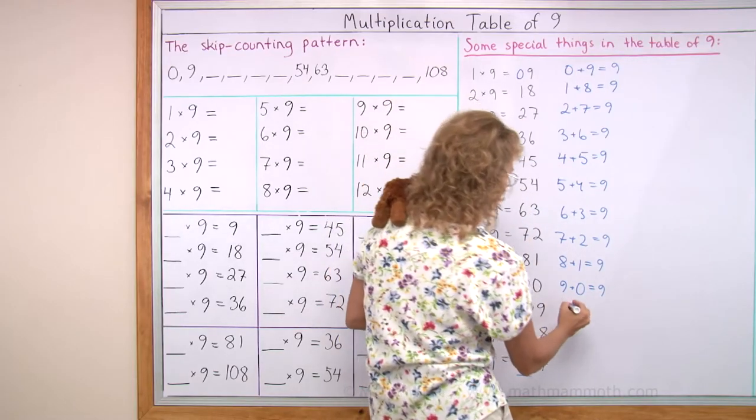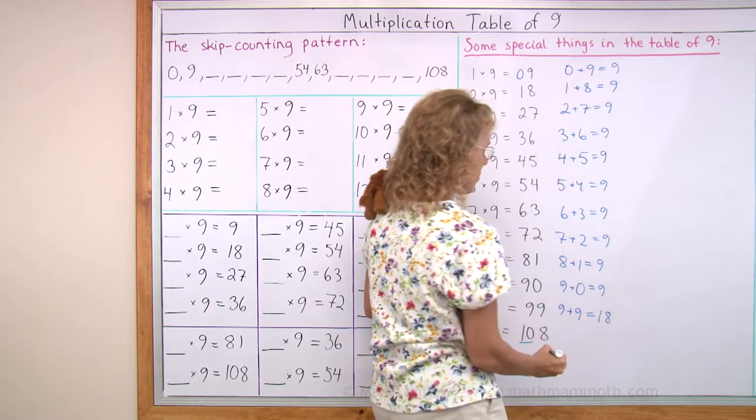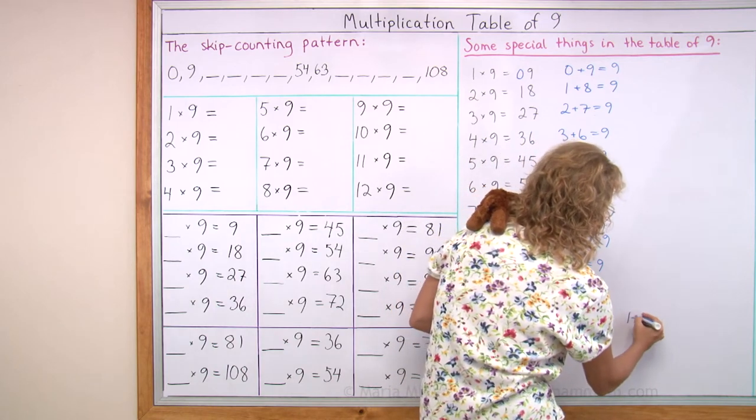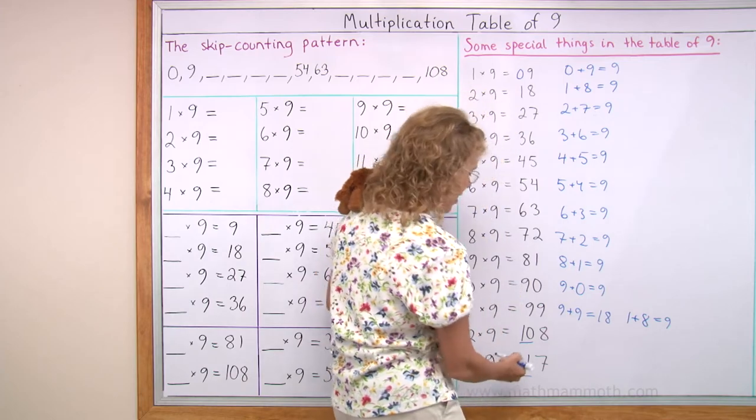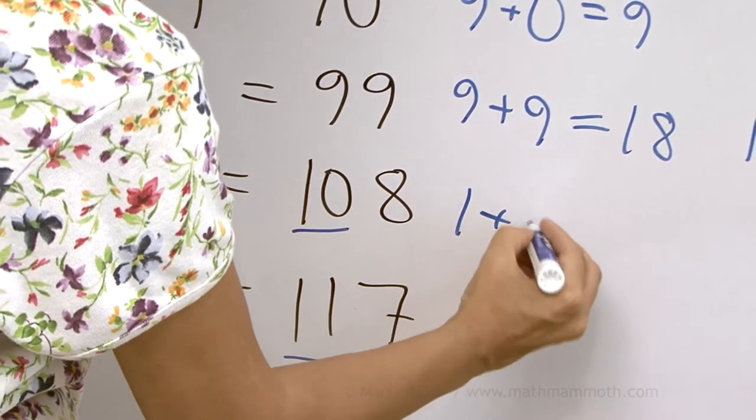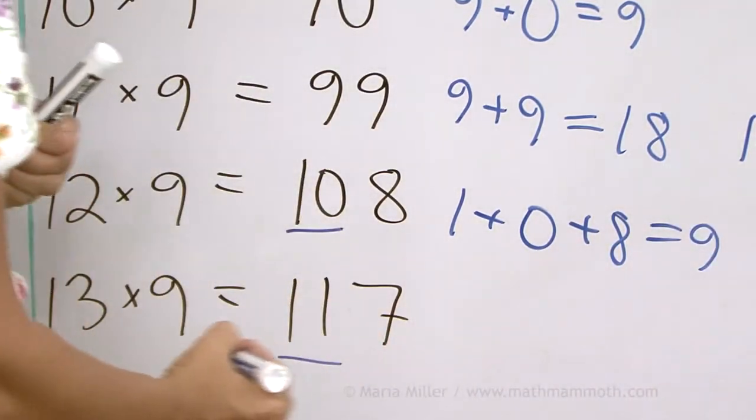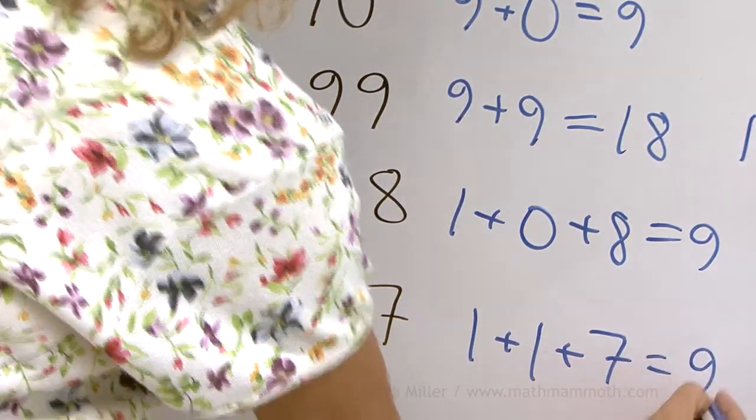How about 99? Well, that's something different. 9 plus 9 is 18. But then, you take 18, you take 1 and 8, and you get 9 again. Here I have 3 digits, 1 plus 0 plus 8, and it still works, still get 9. Or 1 plus 1 plus 7, still 9.